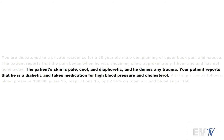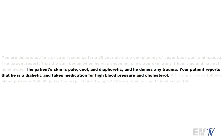The patient's skin is pale, cool, and diaphoretic, and he denies trauma. The patient reports he's diabetic — diabetics usually present atypically when having a heart attack, so his complaints of upper back pain and nausea are considered an atypical presentation, possibly due to his diabetes. He's also taking medication for high blood pressure and high cholesterol, both of which are risk factors in the development of significant coronary artery disease.